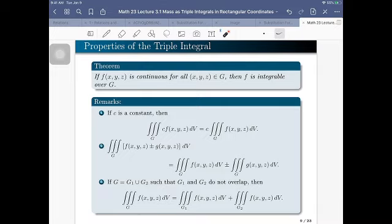So we start off with a theorem about when f is integrable over g. We recall that f is integrable over g if the limit of that approximation that we did before exists. So if the limit exists, then the function is integrable over g and what it just means that the triple integral makes sense. So this happens if the integrand is continuous for all x, y, z in g.